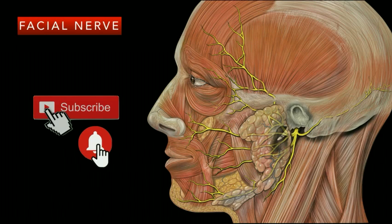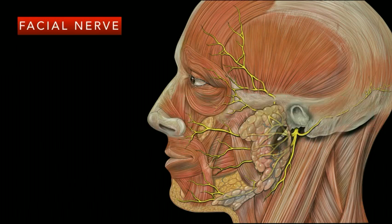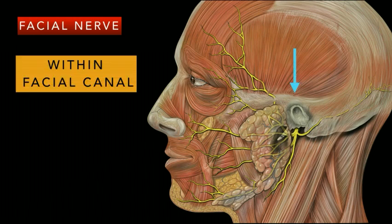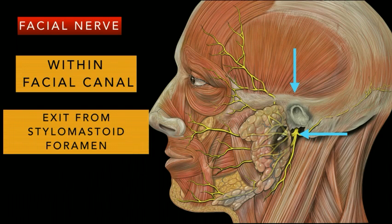To begin with, the facial nerve is the seventh cranial nerve and it's one of the most important nerves for head and neck anatomy. The facial nerve has three parts or three locations where it gives out branches. The first is within the facial canal, as you can see by the blue arrow in the diagram. Second, it gives out branches after it exits from the stylomastoid foramen.